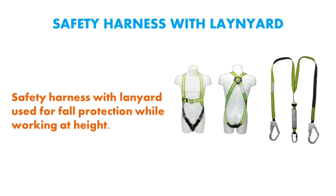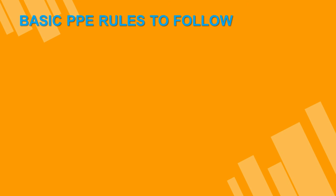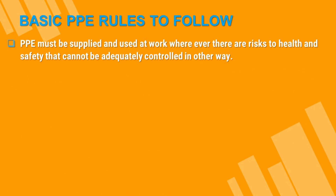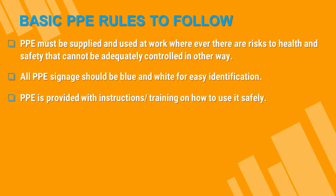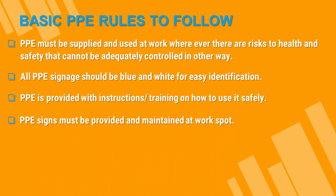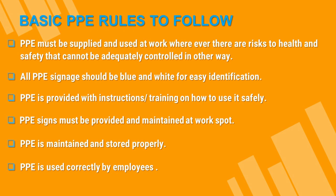Safety harness with lanyard is used for fall protection while working at height. The basic PPE rules to follow at the work spot are: PPE must be supplied and used at work wherever there is a risk to health and safety that cannot be adequately controlled in another way; all PPE signs should be blue and white for easy identification; PPE is provided with instructions and training on how to use it safely; PPE signs must be provided and maintained at the work spot; PPE is maintained and stored properly; and PPE is used correctly by employees.